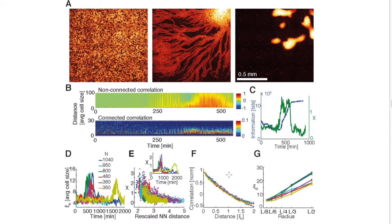In the supplemental information, we also provide other evidence for critical-like behavior. For instance, we look at cluster sizes of similar cell behavior and we see that these cluster sizes have roughly a power law distribution at the critical state. In the images, we also see evidence for critical slowing down — right before aggregation, there were different aggregation centers bubbling up, competing with one another, and this sluggish behavior is typical for a critical-like state.